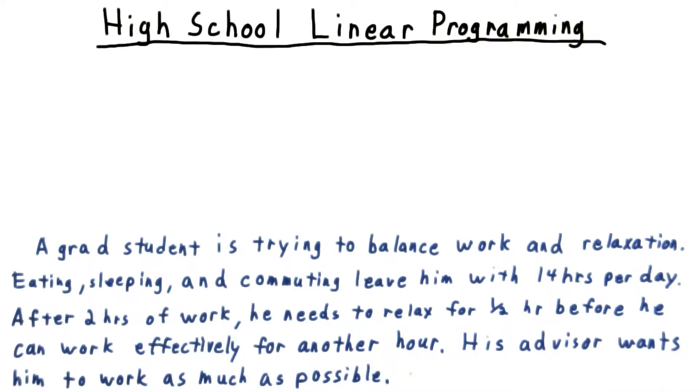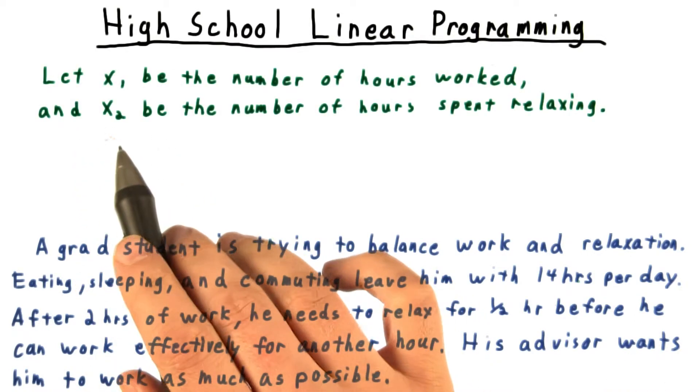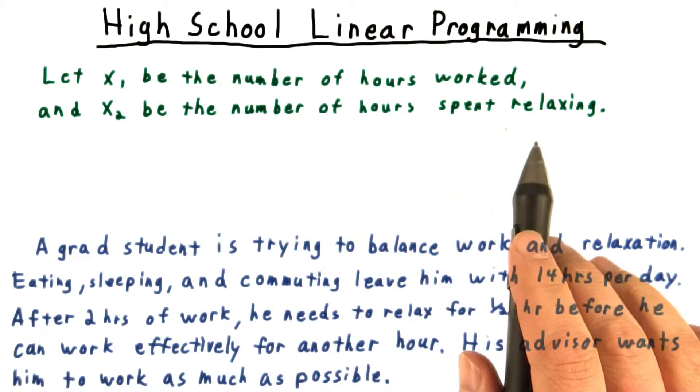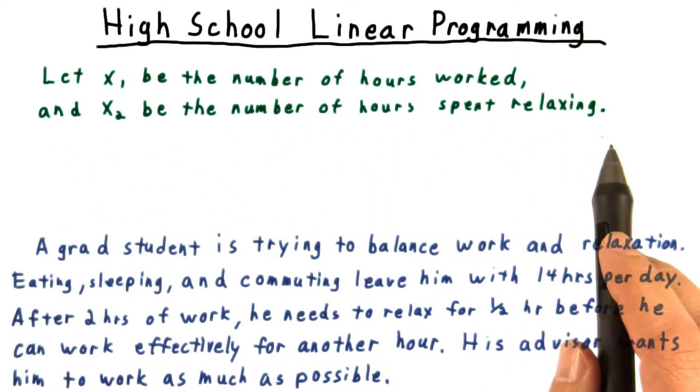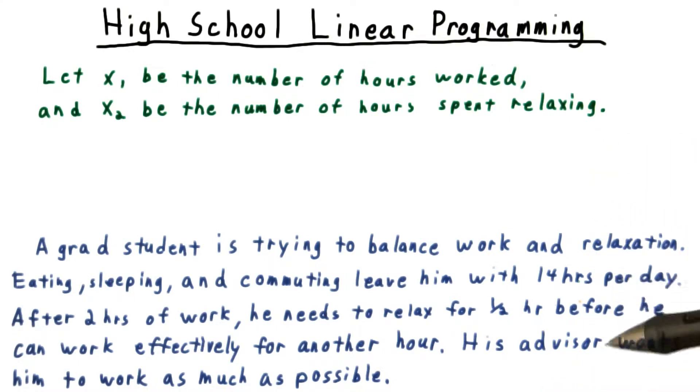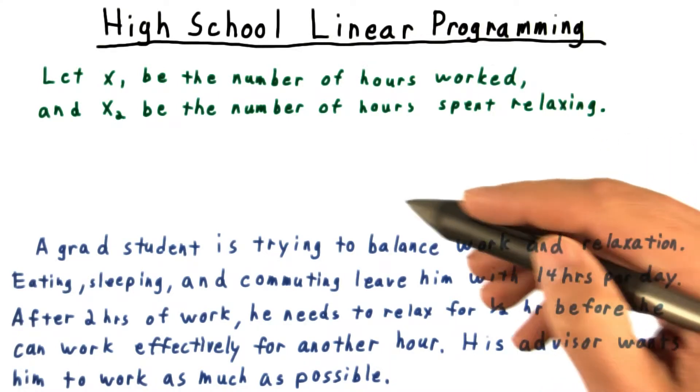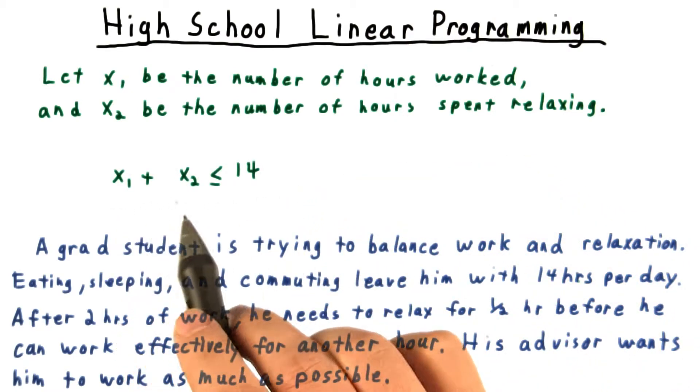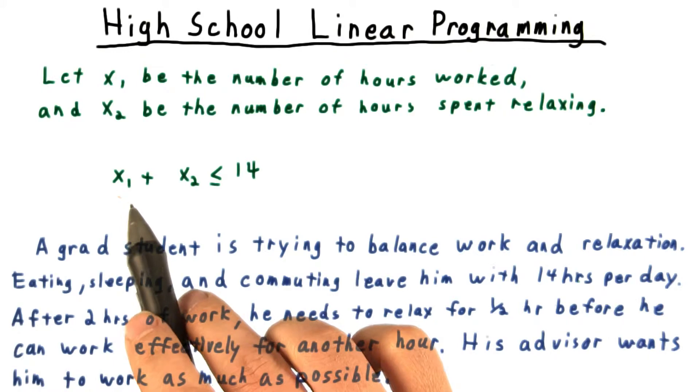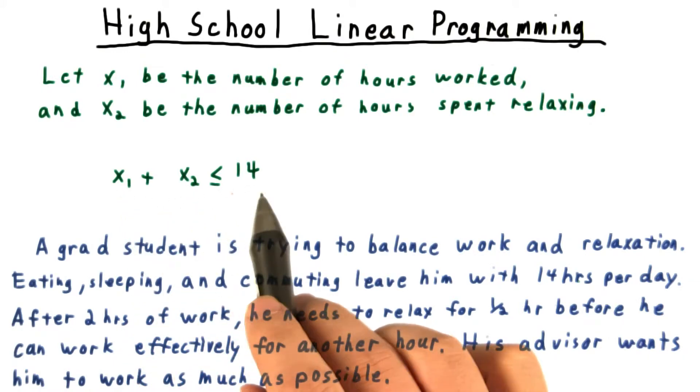His advisor, and probably his mother too, want him to work as much as possible. We'll let x1 be the number of hours spent working on research and let x2 be the number of hours spent relaxing. Then we can express this graduate student's time management problem as the following optimization. We express the fact that he has only 14 hours for these activities by saying that x1 plus x2 is at most 14.